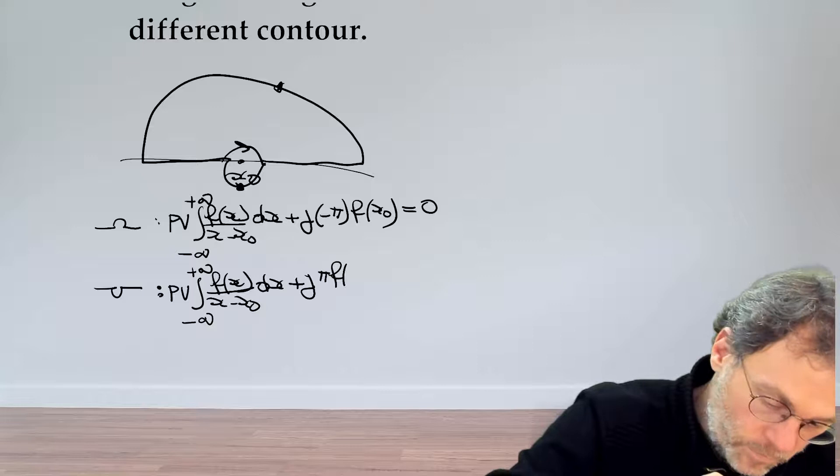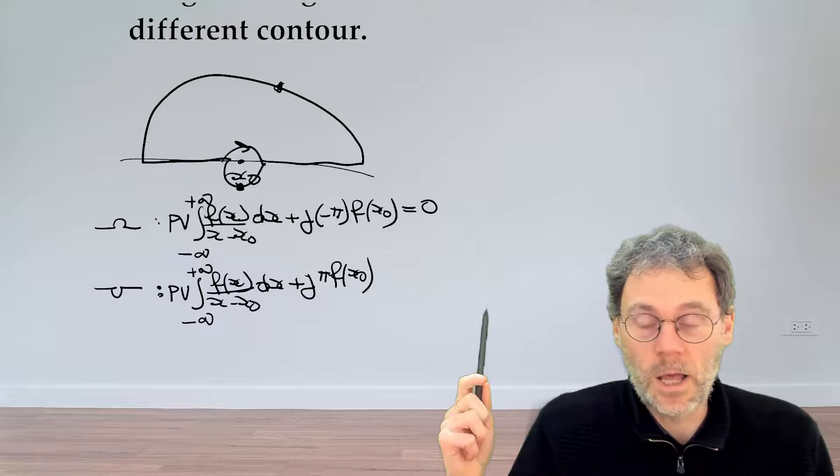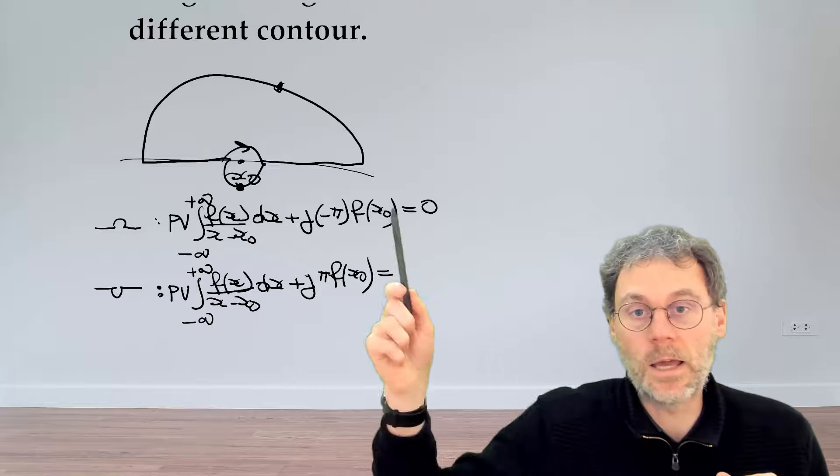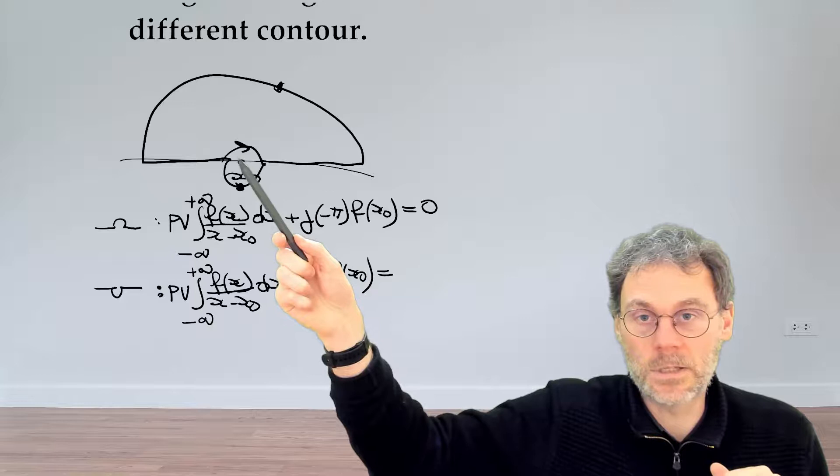That's different, we need to fix that somehow. But no need to worry because we still have the right hand side. In the first case when we closed our contour like this, we neatly sidestepped the singularity here, so there were no singularities inside the contour and no residues to calculate.